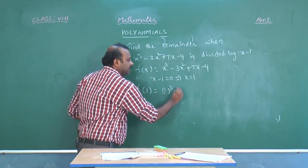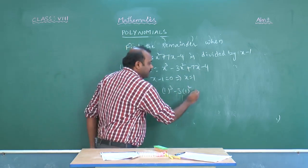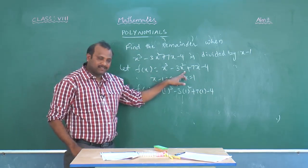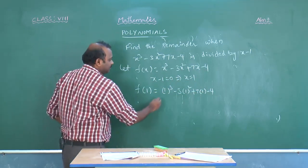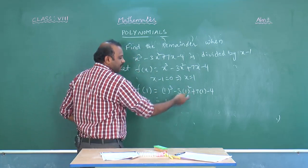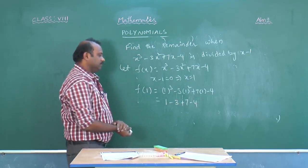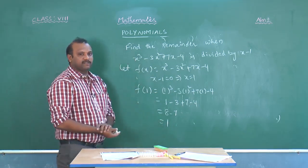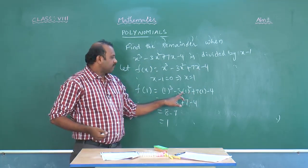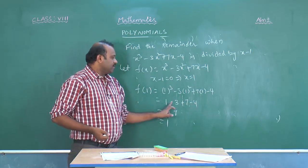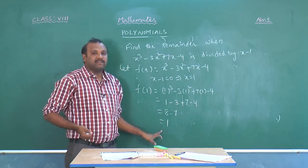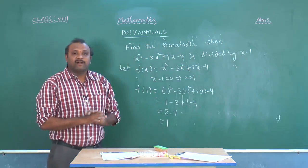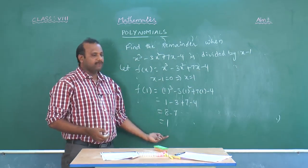f of 1 equals 1 cubed minus 3 into 1 squared plus 7 into 1 minus 4. That gives us 1 minus 3 plus 7 minus 4, which equals 1. So the remainder is 1. Here we are not doing the actual division at all. Without actual division, we are directly able to find the remainder.